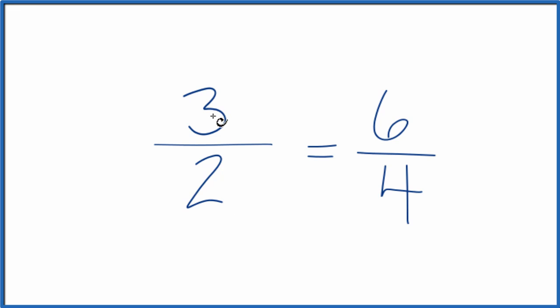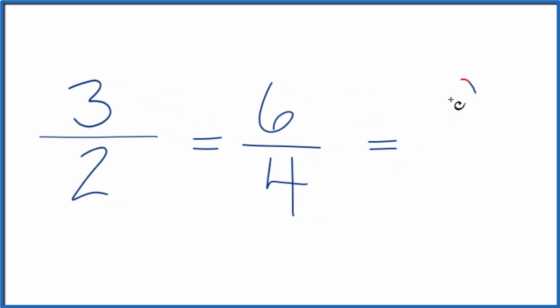You could also triple it. 3 times 3, that equals 9. 3 times 2 is 6. This is another equivalent fraction for 3 over 2.